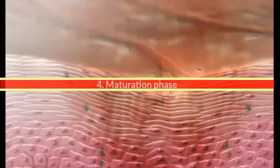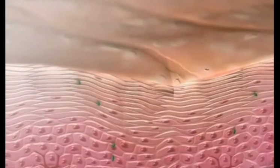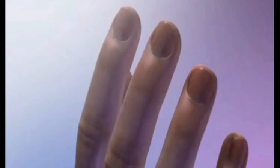The last stage is the maturation phase, which occurs after the 21st day and can last up to 2 years, depending on the size of the wound — bigger wounds take longer and smaller wounds heal earlier. In this phase, the strengthening of the new tissue occurs as it matures and becomes flexible. Collagen fibers reorganize, remodel, and mature, resulting in an overall increase in the tensile strength of the tissue.